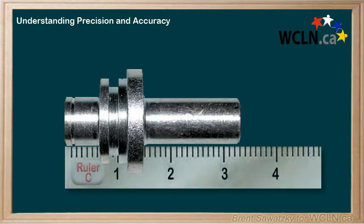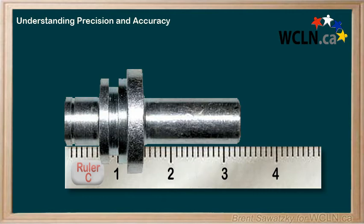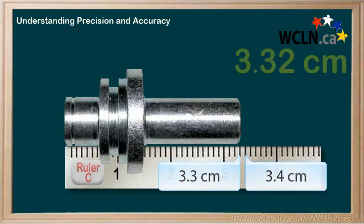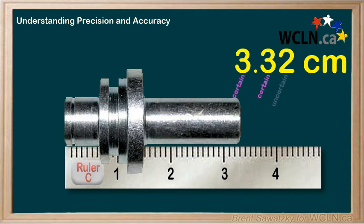Switching to ruler C. This ruler appears to have the same precision as ruler B — it's marked in one millimeter increments — but the measurement seems to disagree with our previous readings. According to ruler C, this part is definitely between 3.3 and 3.4 centimeters. With one uncertain digit, we report the measurement as 3.32 centimeters: two certain digits and one uncertain digit. But we note a problem — assuming rulers A and B agree that the measurement should be around 3.5 centimeters, ruler C's result seems inaccurate.